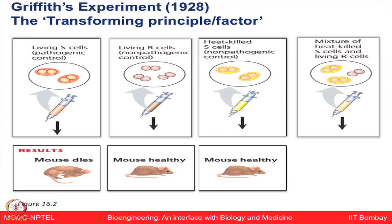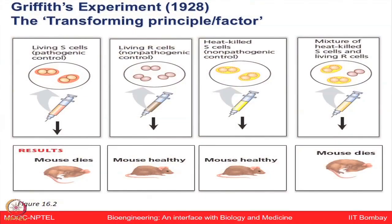If you have the last situation when you are adding a mixture of heat killed S cells and living R cells, what was the phenotype for the mouse? Mouse died. Why?